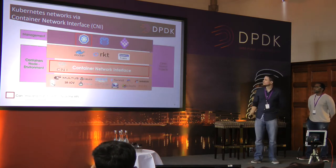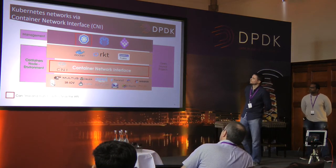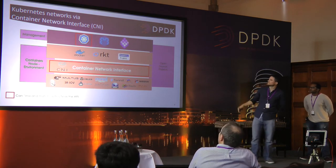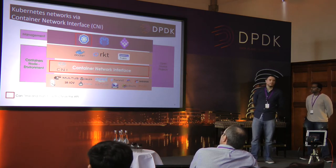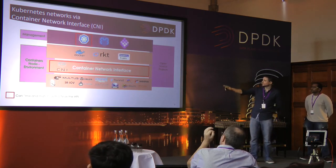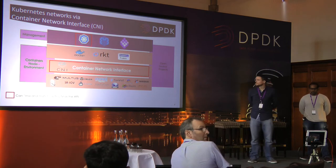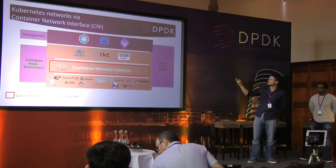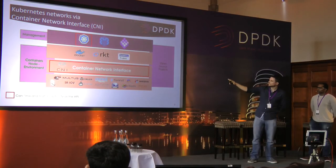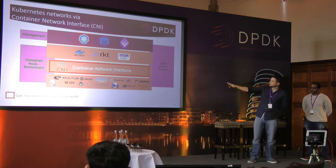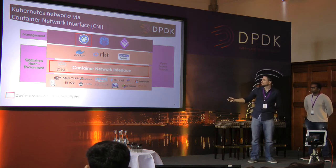Here are some examples of open source projects in this stack. For orchestration, you have Kubernetes and Mesos — we have a red square on Kubernetes as our recommended choice in our reference architecture. On the runtime level, you have Docker, Rocket, and Hyper — Kubernetes can orchestrate any of these. Then you have the Container Network Interface, and examples of CNI plugins include our own Multus, Kuryr, Calico, and Flannel.